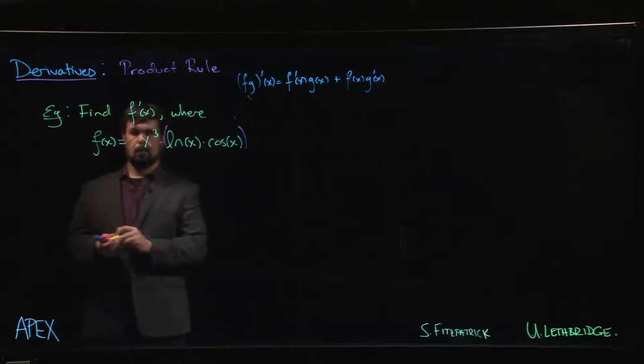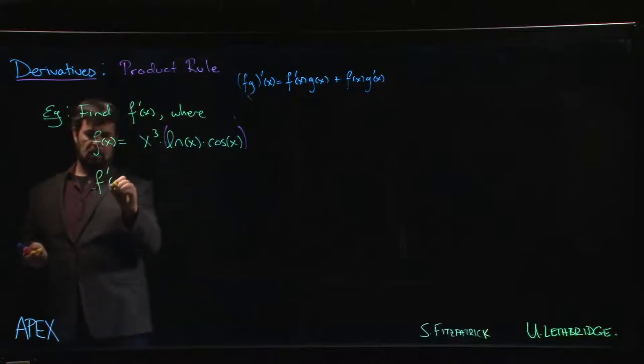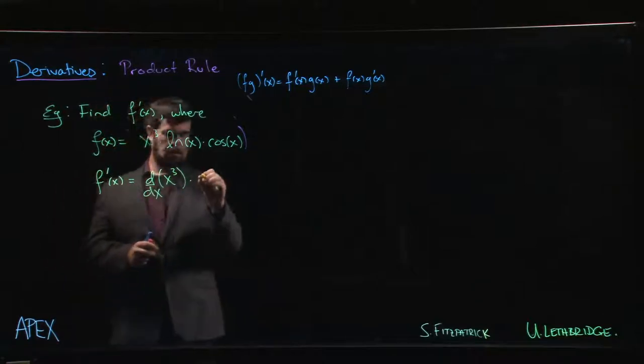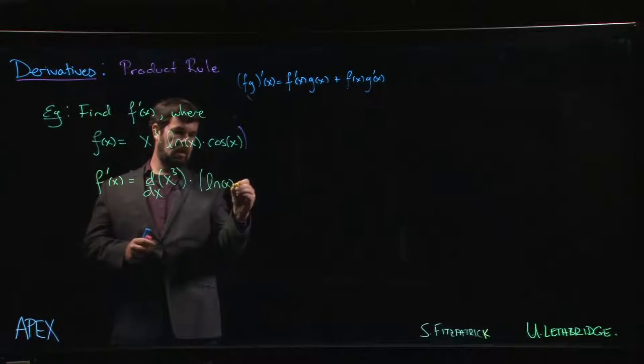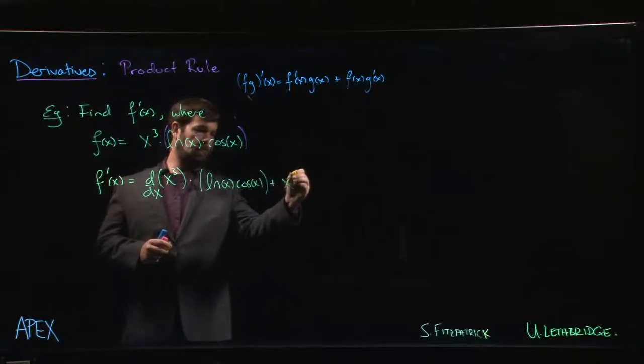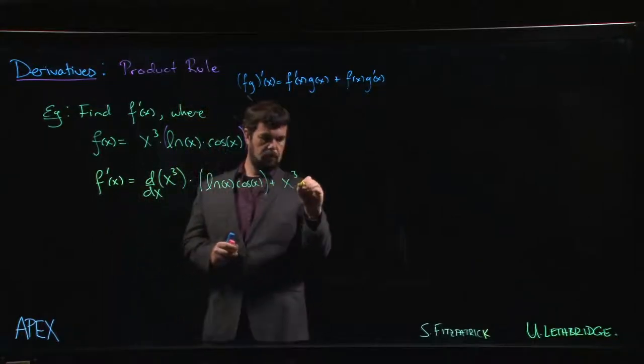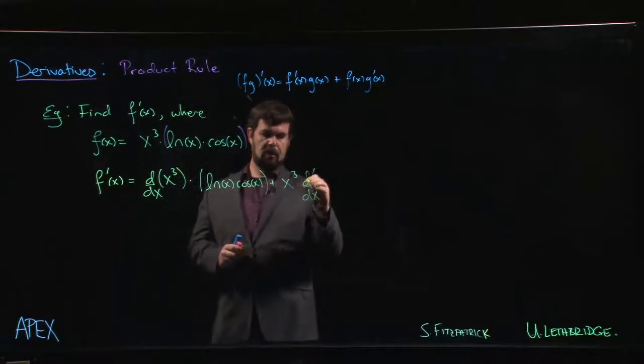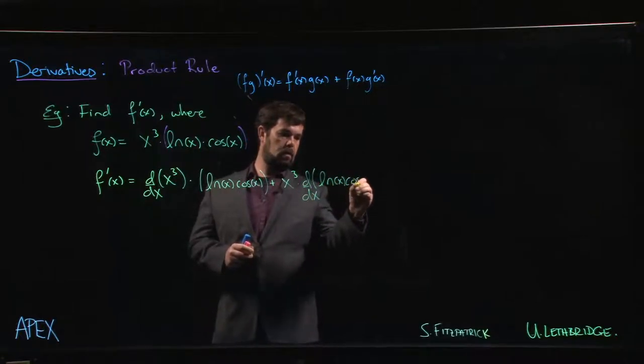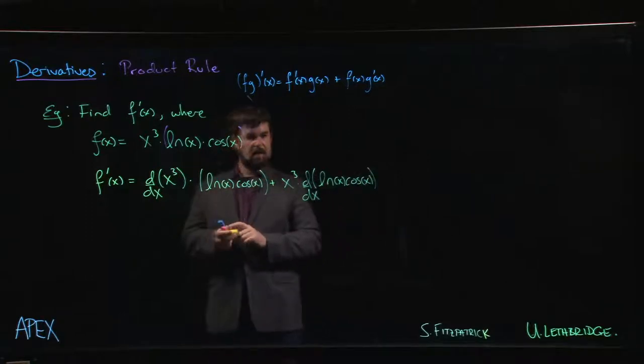If we do it that way, then the product rule says f prime of x is going to be the derivative of x cubed multiplied by log x cos x, plus x cubed times the derivative of log x cos x.